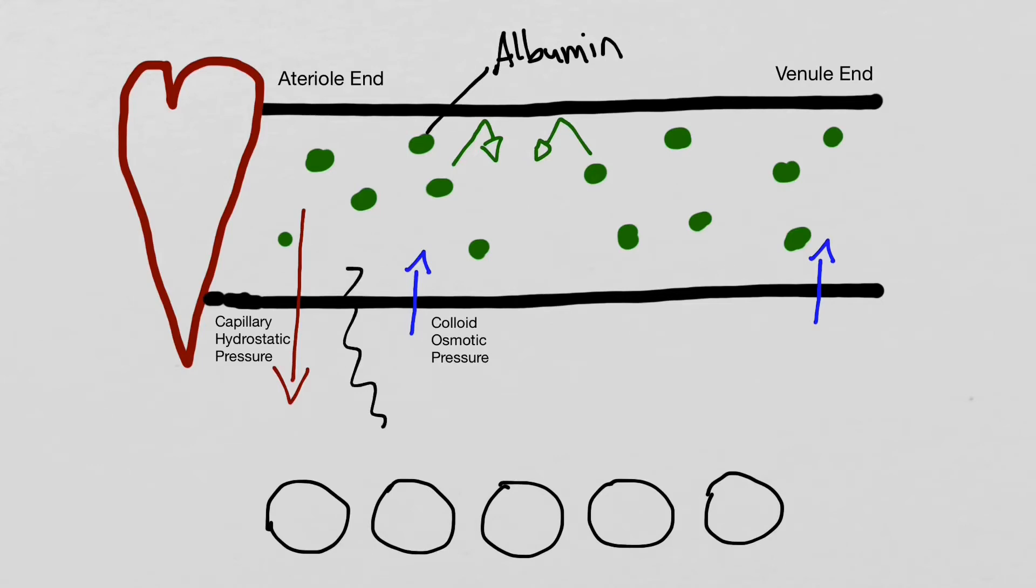As capillary hydrostatic pressure is larger than colloid osmotic pressure, a flow of fluid out of the capillary is created at the arterial end. As blood flows further away from the heart, the capillary hydrostatic pressure diminishes.